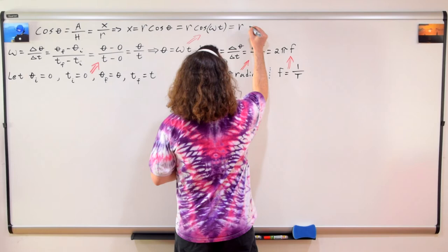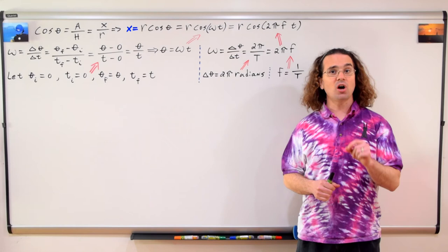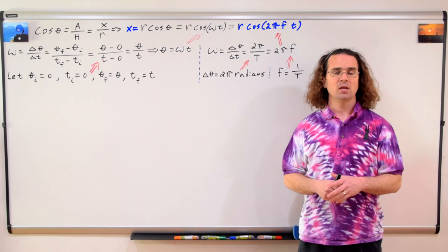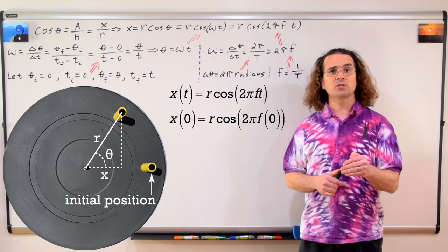And we get the x position of an object in simple harmonic motion equals R times the cosine of the quantity two pi times frequency times time. Also notice at the initial position, when time equals zero, this is the cosine of zero, which is one. So the x position equals R.